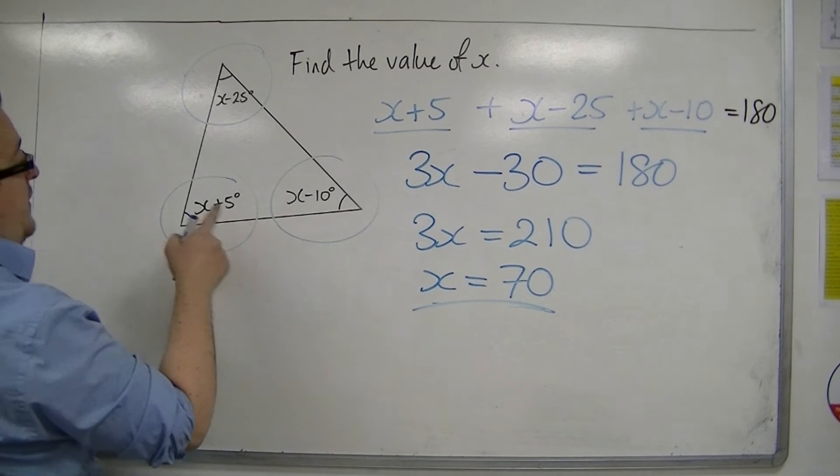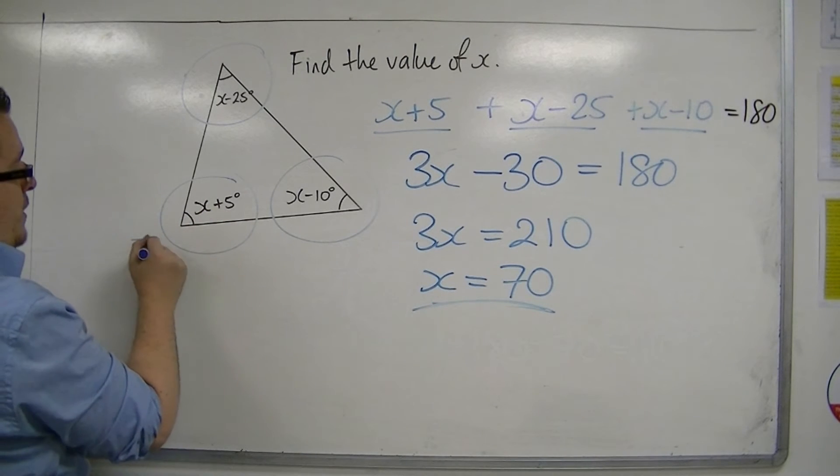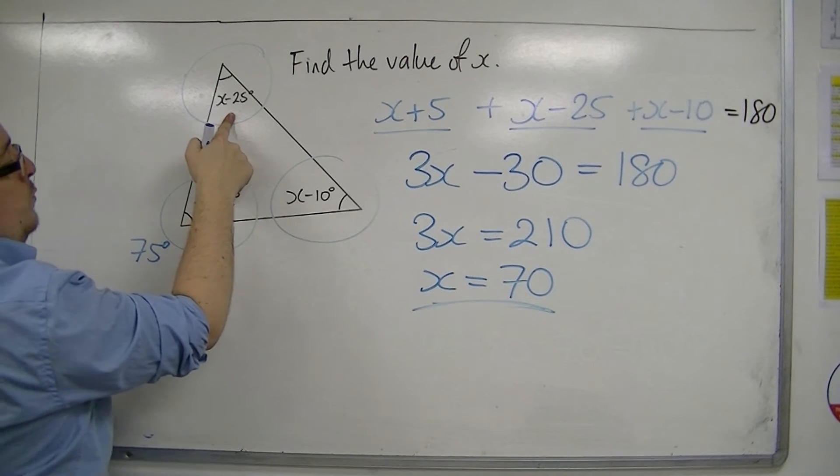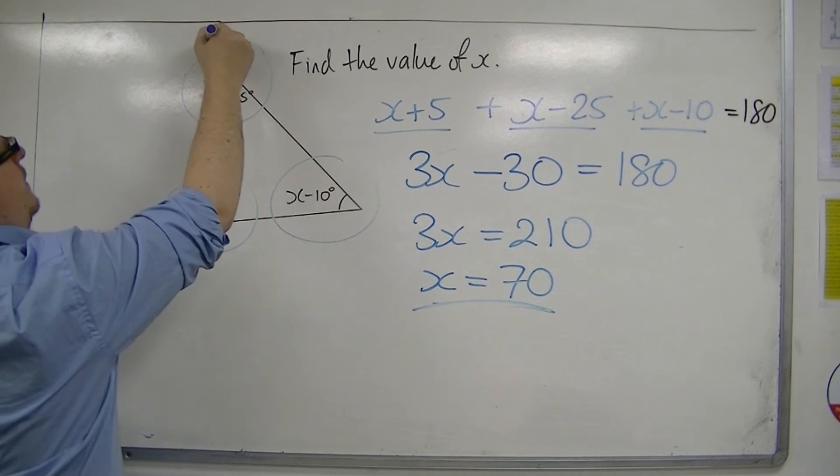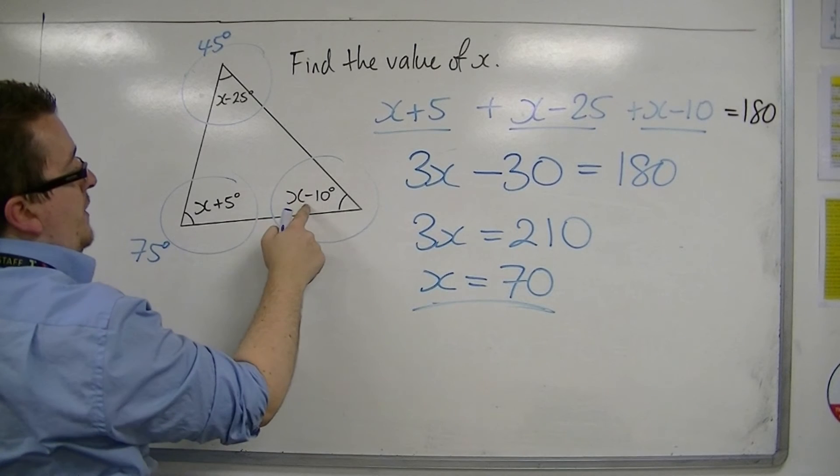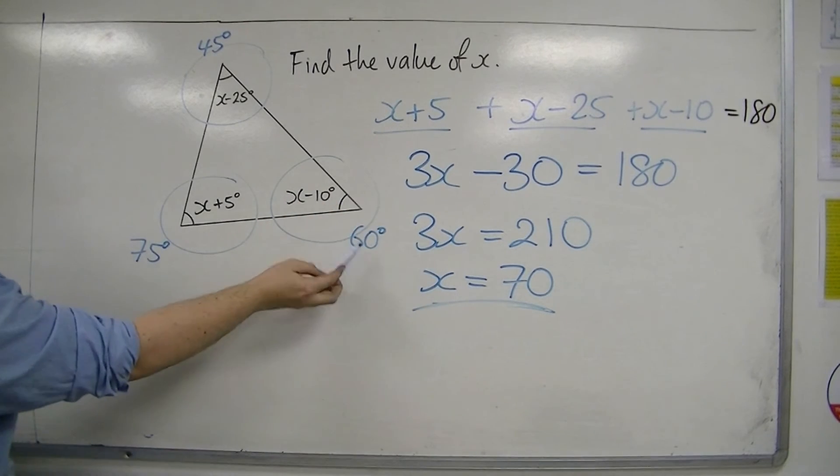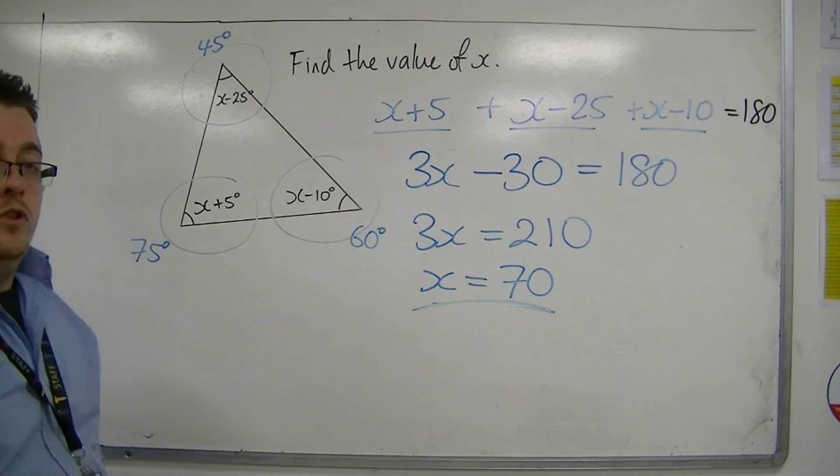And the three angles would be 70 plus 5, so 75 degrees; 70 take away 25, which is 45 degrees; and 70 take away 10, which is 60 degrees. And when you add those three angles together, you should get the 180.